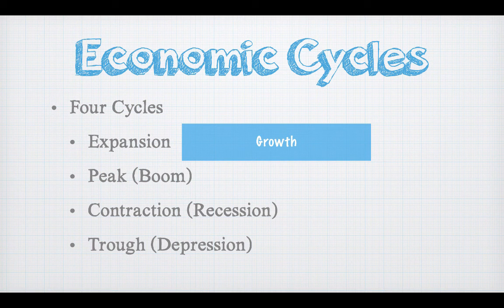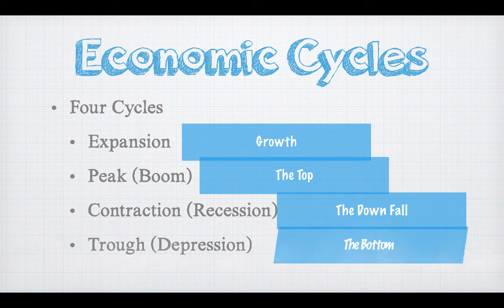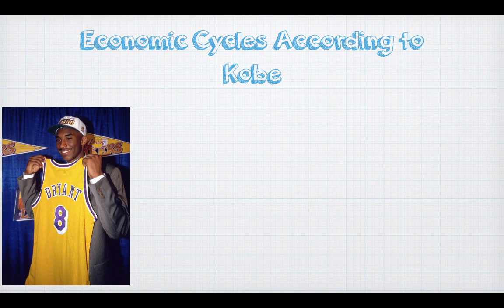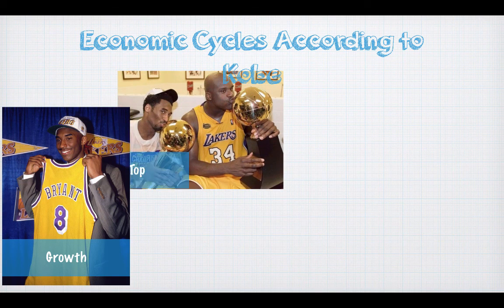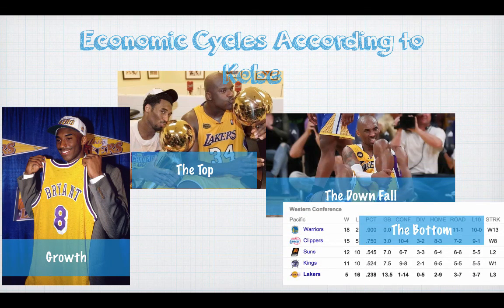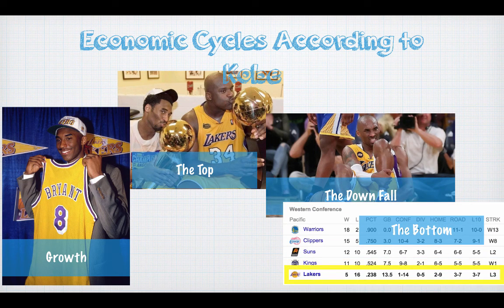So that's kind of it. Expansion — you're going to see growth. Peak — you're going to see the top. Contraction starts the downfall, and the trough is at the bottom. If we want to look at it according to Kobe Bryant's NBA career: draft day is the growth; winning championships is the top; blowing out his Achilles is the start of the downfall; and the Lakers being dead last in the Pacific division with a 23% winning percentage is the trough. Answer those questions at the bottom. Take care, and I'll see you soon.